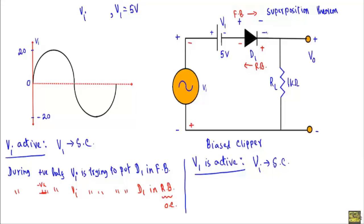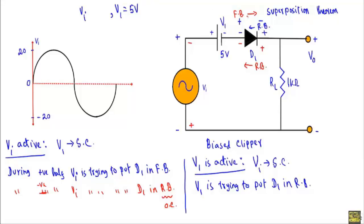When V1 is active and vi is replaced by a short circuit, the positive terminal of V1 is connected with the n-side of D1 and the negative terminal is connected with the p-side of D1. That means V1 is trying to put diode D1 in reverse bias, so V1 tries to conduct current in the reverse direction. So we have three total effects: forward bias due to positive vi, reverse bias due to V1, and reverse bias due to the negative half cycle of vi.